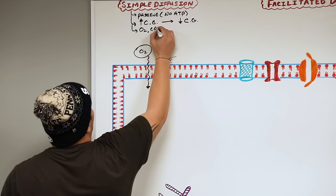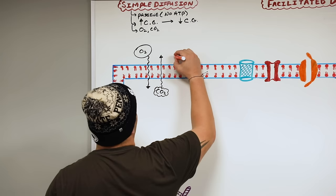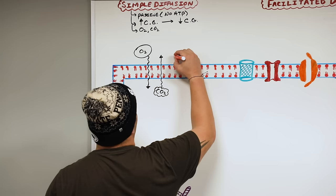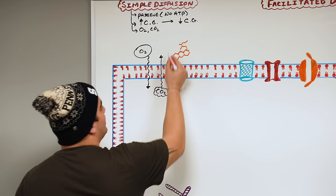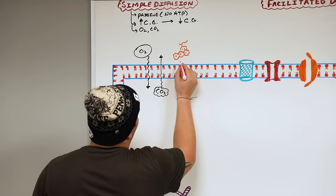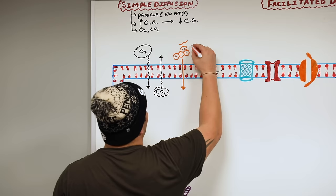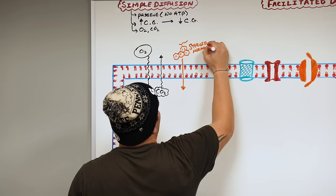Other important molecules that move by simple diffusion include steroid hormones — hormones derived from cholesterol. Steroid hormones are lipid soluble, allowing them to move into the cell without needing a transport protein or carrier. Examples include testosterone, estrogen, progesterone, aldosterone, cortisol, and vitamin D.